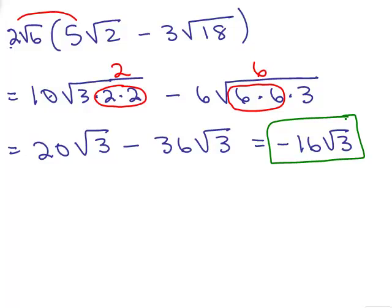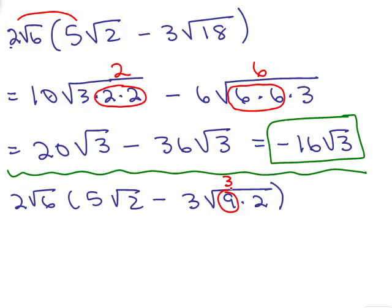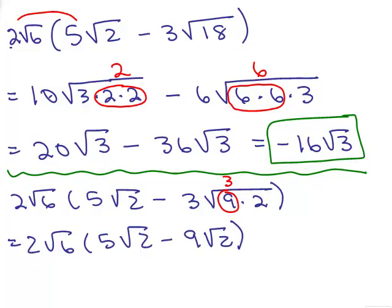Now let's do the same problem by simplifying the square root of 18 first. I still have 2 square roots of 6 times the quantity 5 square roots of 2 minus 3 square roots of 18. The square root of 18 is square root of 9 times 2, so a 3 pops out, giving 3 square roots of 2. So the expression inside becomes 5 square roots of 2 minus 9 square roots of 2. By order of operations, simplify inside the parentheses first. Since they're both square roots of 2, subtract the coefficients: 5 minus 9 gives negative 4 square roots of 2.